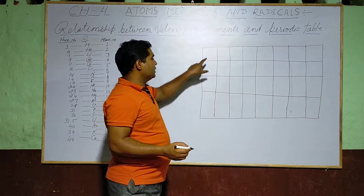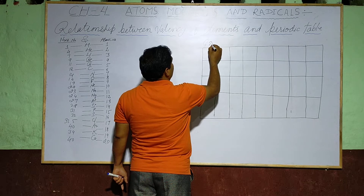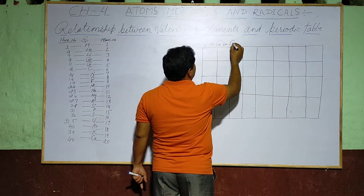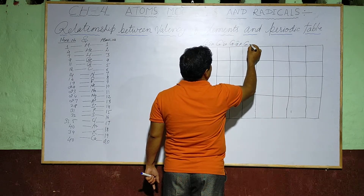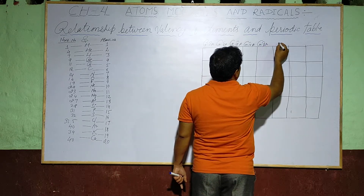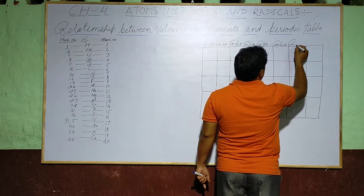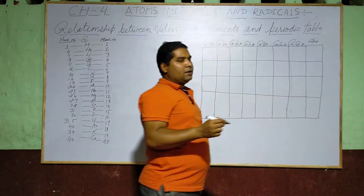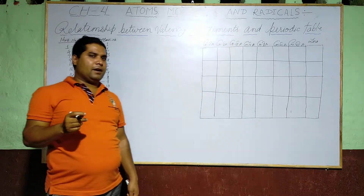Here I have made 8 groups: Group 1A, Group 2A, Group 3A, Group 4A, Group 5A, Group 6A, Group 7A, and here the elements with zero valency will be placed. Zero valency elements are known as inert gases. The reason behind it — they are stable in nature.